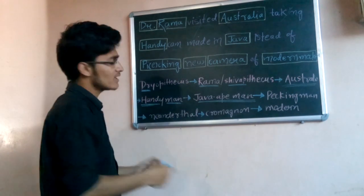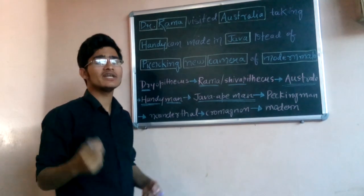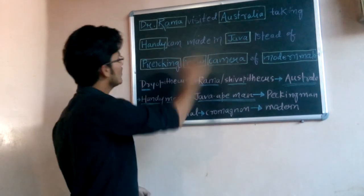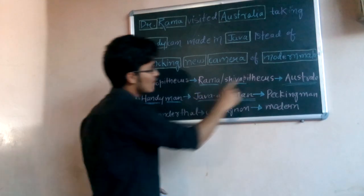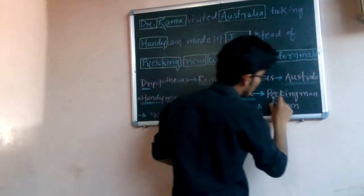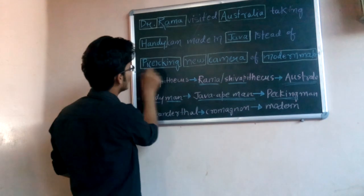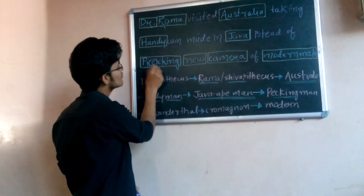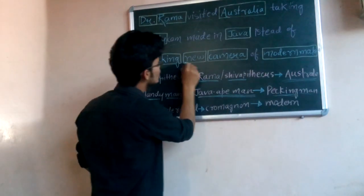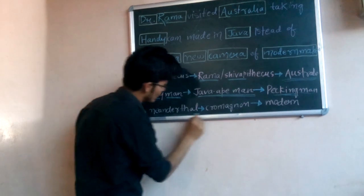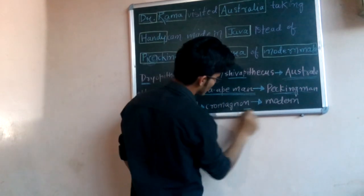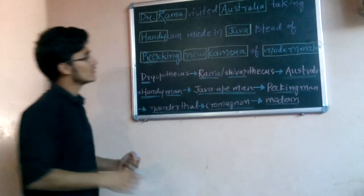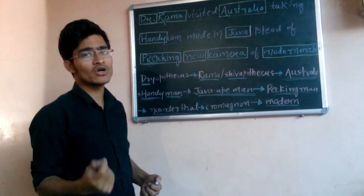All the words in the mnemonic closely resemble the names, making it very easy to memorize. The letter 'E' is mentioned so that it can be remembered as Peking Man. After Peking Man, 'new' simply means Neanderthal Man, 'camera' means Cro-Magnon Man, and 'modern make' simply means Modern Man.